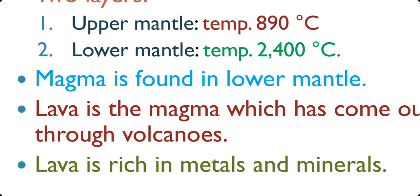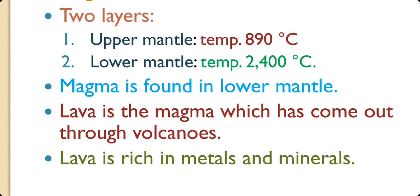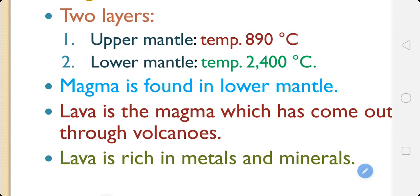Now, lava is a magma which has come out. If there is a volcanic eruption, then the magma comes out and after the magma has come out of the volcano, it is known as lava. This lava is naturally rich in metals and minerals.